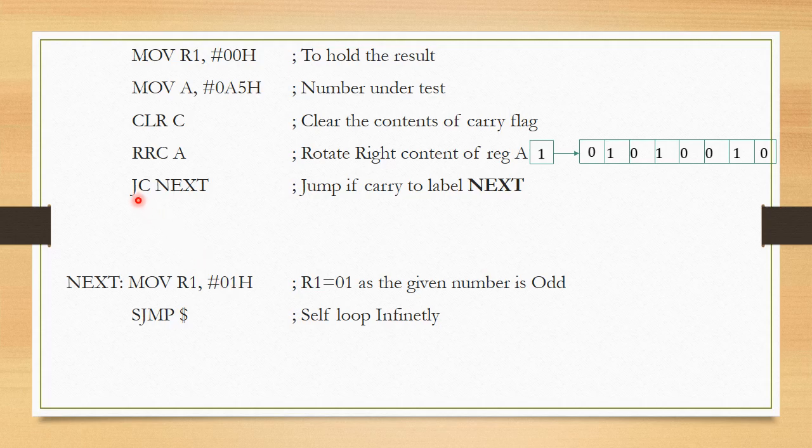Now, let us get back here. So, what if the carry was not set? If the carry was not set, then it is concluded that the given number should be an even number. This means the given number did not set the carry flag. The LSB of the given number was a 0 indicating that the number is even. So, what am I supposed to do? I will be loading 0 to the register R1.